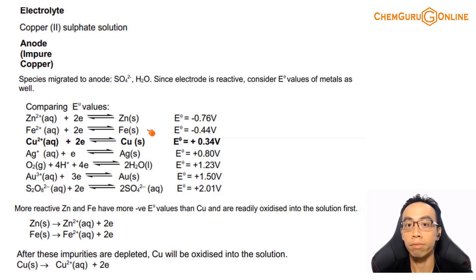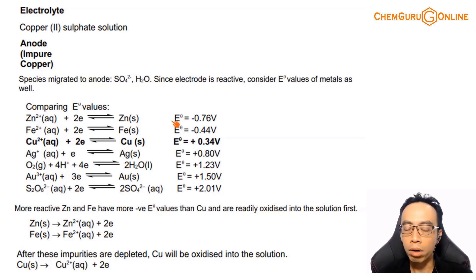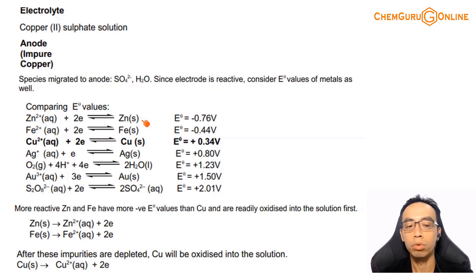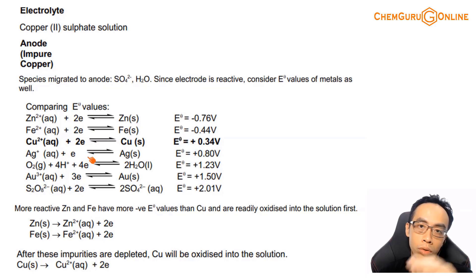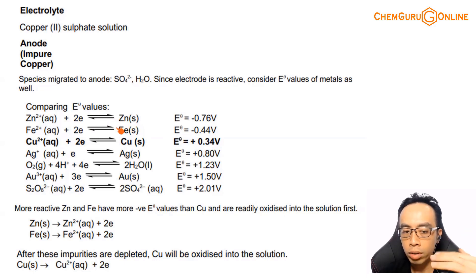Ranking the metals, zinc has the most negative E° value, so zinc is oxidised first and Zn²⁺ goes into solution. Since impure copper is about 90% copper, the zinc impurity is a small quantity and is quickly depleted. Once zinc is gone, the next species with the next most negative E° value — iron — will be oxidised, and Fe²⁺ goes into solution. Turn by turn, once iron is depleted, it will finally be copper's turn to be oxidised.